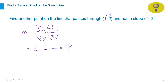Any number given as a whole number can be rewritten as a fraction by simply dividing it over one. Now the remaining step is to fill in the blanks: two minus what will give you a negative three?